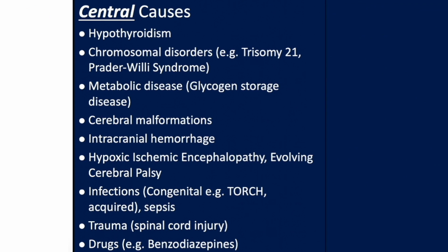Looking at central causes, hypothyroidism is an easily corrected cause and should be screened for. Other central causes include chromosomal disorders, of which trisomy 21 is common, metabolic disease, cerebral malformations, evolving cerebral palsy, infections like TORCH infection, trauma, and the use of drugs, especially sedative drugs.